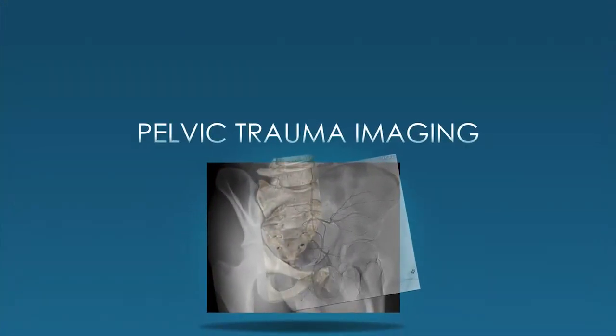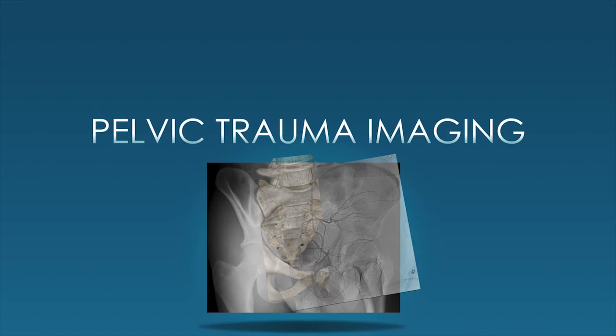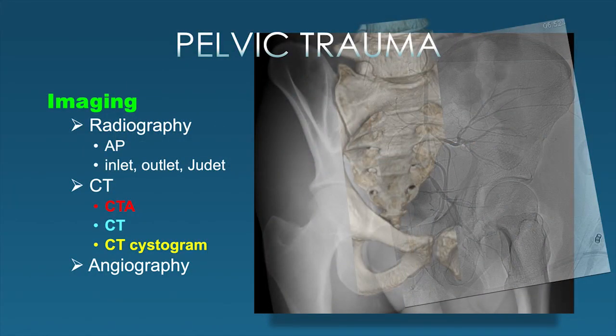Let's talk about imaging these trauma patients. We begin with radiography, particularly the AP view. Other views available but not done in the trauma bay include the inlet, outlet, and oblique views referred to as Judet views. We have CT, which can be done as a CT angiogram when there's concern for bleeding, a routine CT integrated in your trauma scan that may be more venous phase, and a CT cystogram to specifically evaluate the bladder. And then we have angiography.